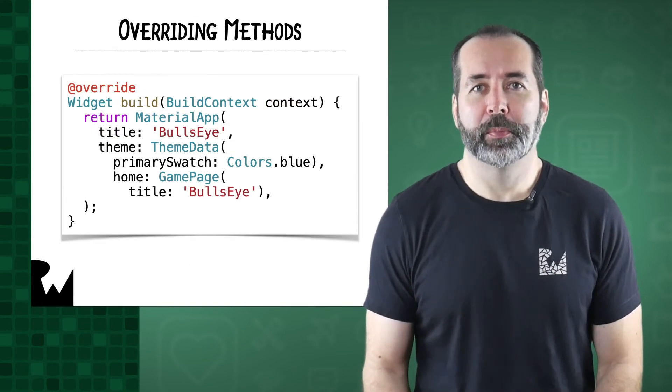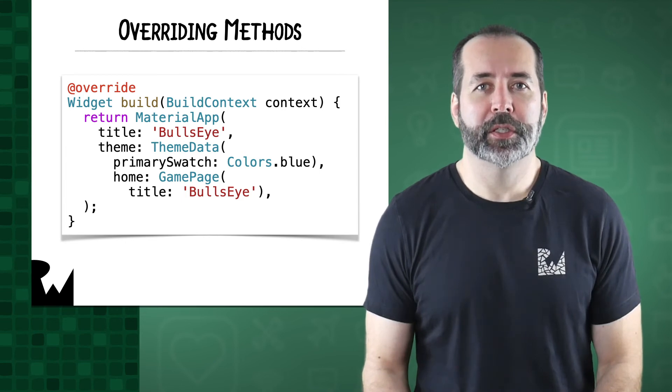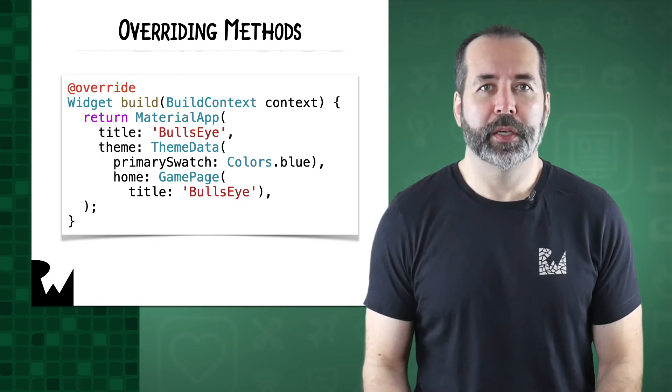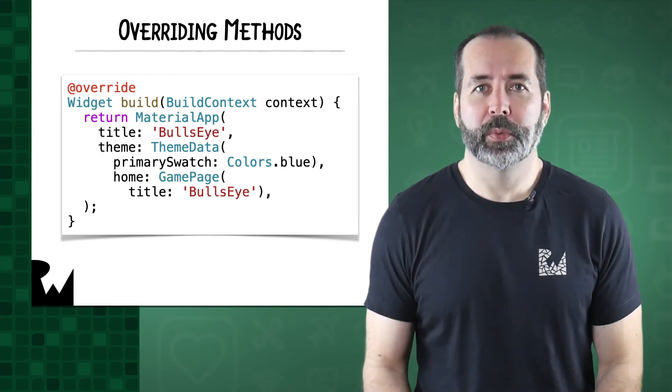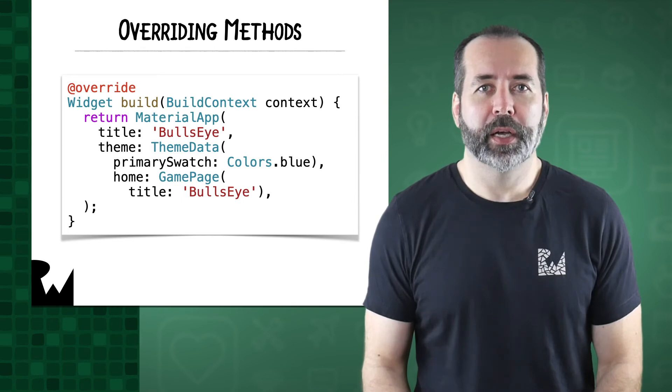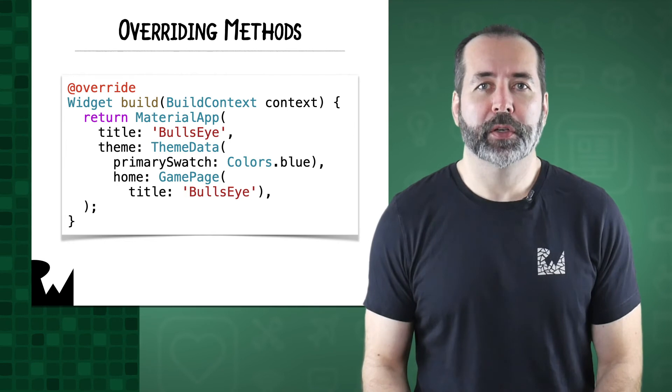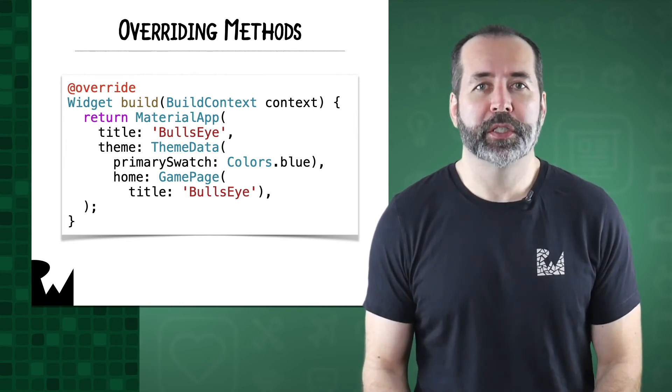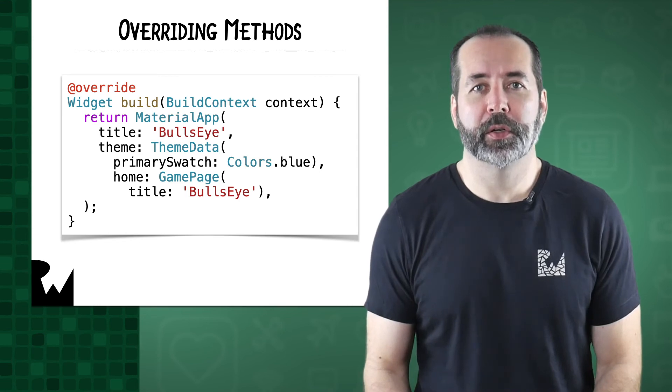Another important concept when working with methods is that you'll often need to change their default behavior by doing what is called an override. You've seen a few examples already of overriding the build method of a widget, which tells the widget how to draw on the screen. You don't call the build method yourself. Flutter calls it for you when it renders widgets to the screen. You just need to provide an override to tell Flutter what to do.